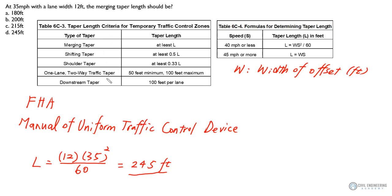So as you can see, there are five types of taper: merging taper, shifting taper, shoulder taper, one-lane two-way traffic taper, and downstream taper.